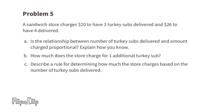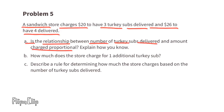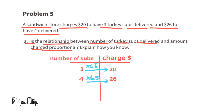Problem Number 5: A sandwich store charges $20 to have three turkey subs delivered and $26 to have four delivered. Part a: is the relationship between number of turkey subs delivered and amount charged proportional? Since $20 divided by 3 subs equals approximately $6.67 per sub, and $26 divided by 4 subs equals $6.50 per sub, the relationship is not proportional.